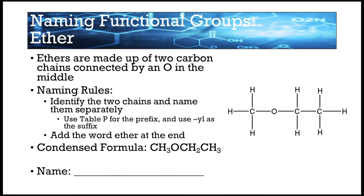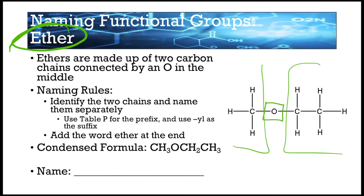Next is an ether. How you know something is an ether is you have an oxygen in the middle and two hydrocarbon chains on either side. Ethers have carbon chains on either side of an oxygen — so here's one carbon chain, here's two carbon chains.